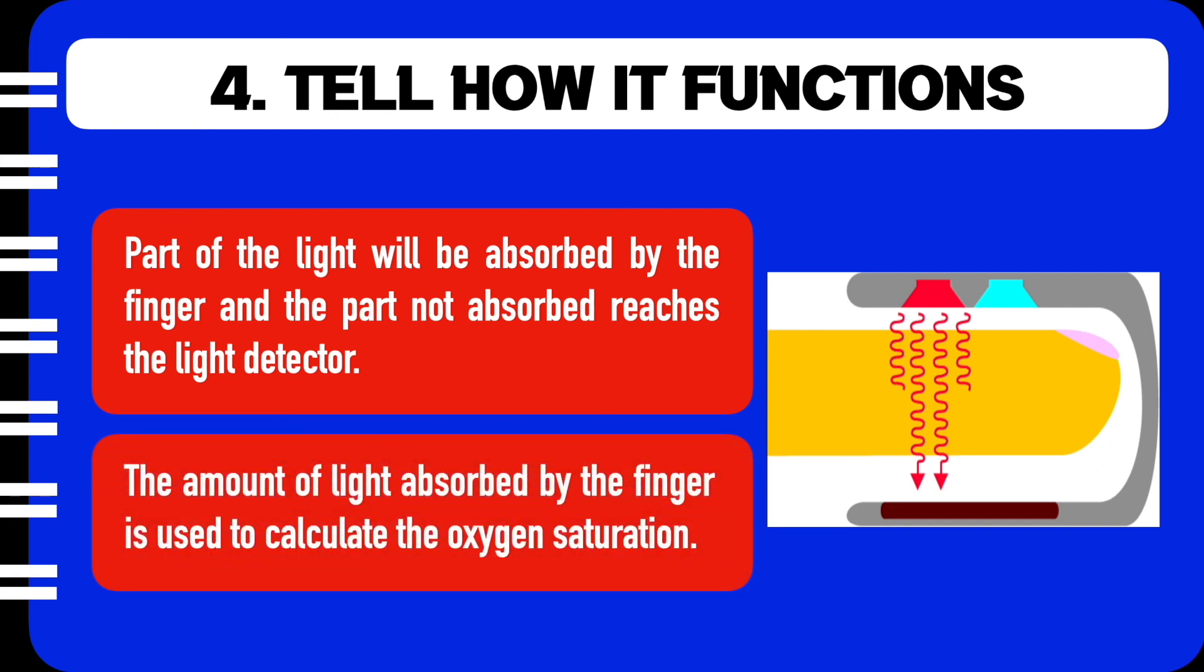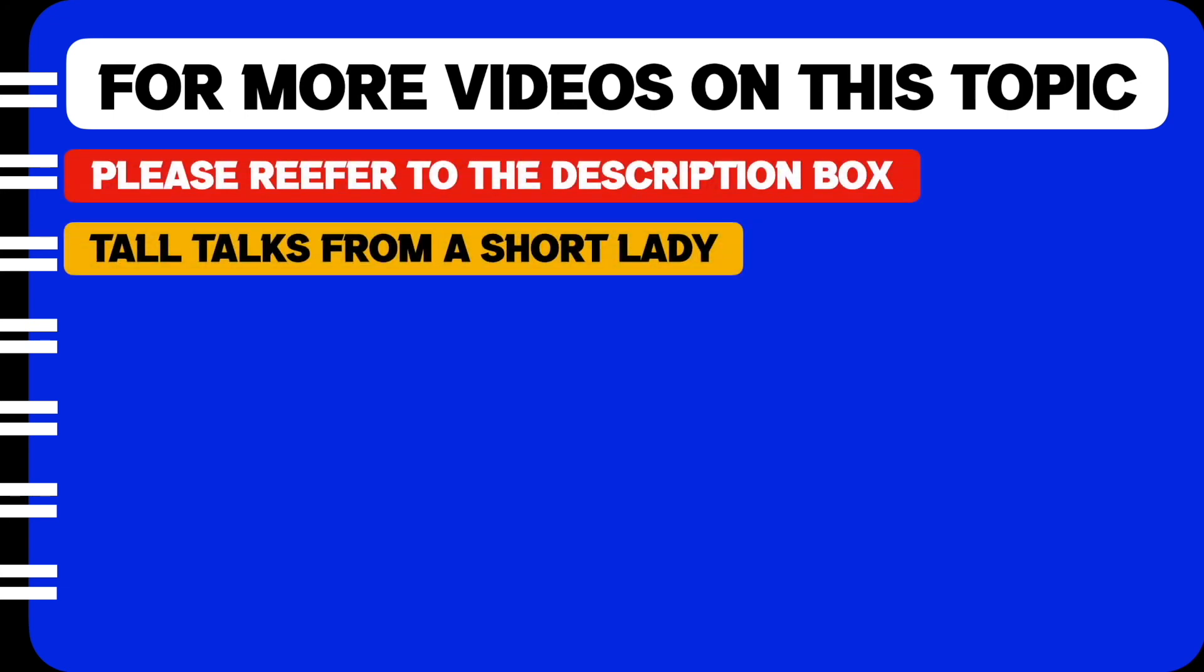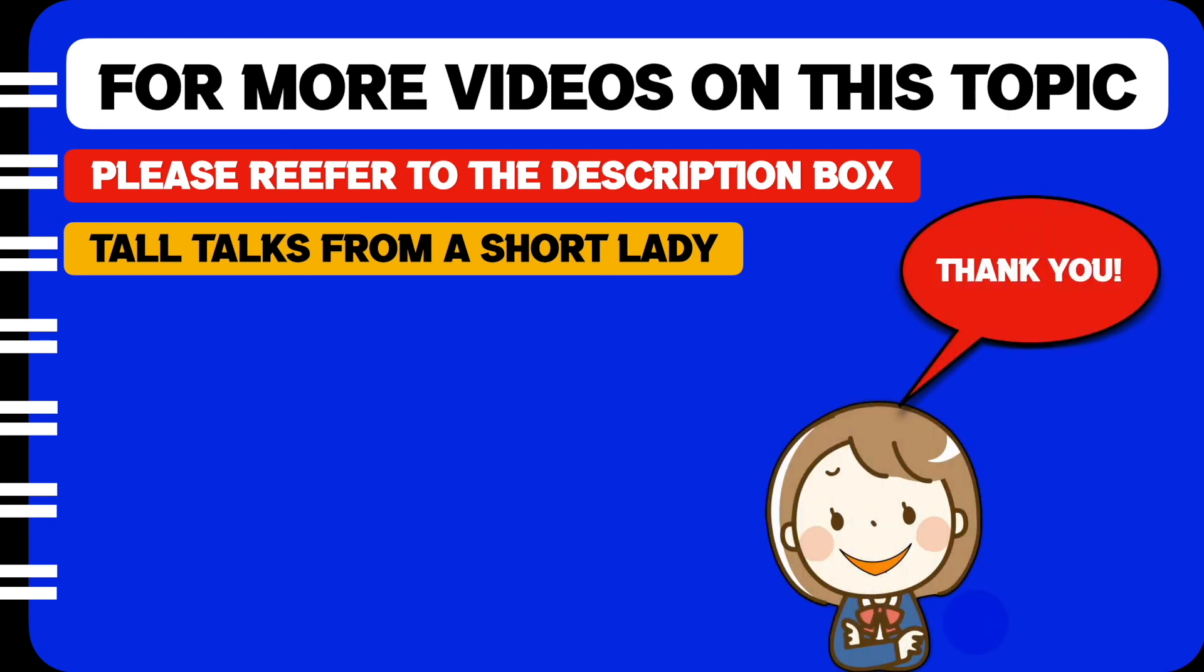The amount of light that is absorbed by the finger is used by the oximeter to calculate the oxygen saturation level in the blood. This is how a description of an object goes. For more videos on this topic, please refer to the description box below. The name of my channel is Tall Talks from a Short Lady and with that I will say thank you and bye.